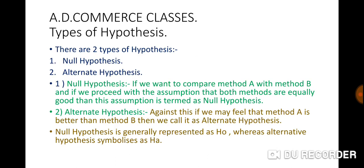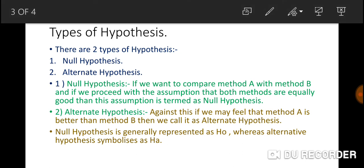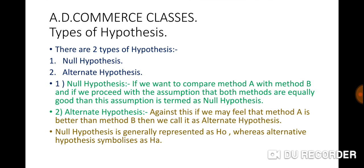Hypothesis is basically of two types: one is null and one is alternate. If we compare A to B and find that both methods are equally good, we did not find a difference — so this is null hypothesis. For example, Ram and Shyam are both equally good boys — that is null hypothesis. If I say Ram is better than Shyam in comparison, that is the alternative hypothesis. Null hypothesis is denoted as H0 and alternative as HA.